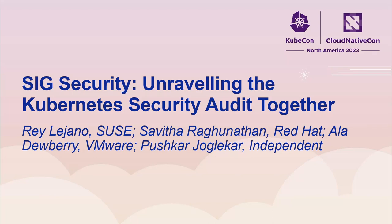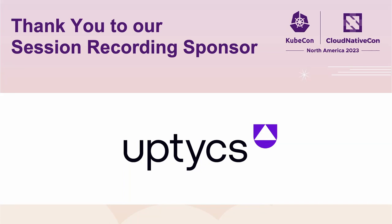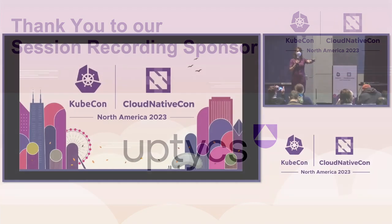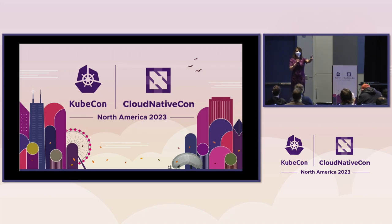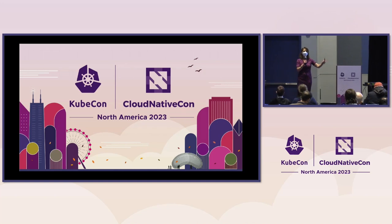Well, hello everyone. What are some examples of two things that go together well? I'll start: peanut butter and jelly. Could I get a little audience participation here? Examples of two things that go together well? Cookies and milk. Salt and chocolate. Bacon and eggs. Excellent. These are all excellent examples.